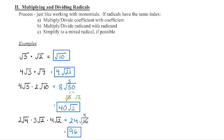Let's begin with multiplication. If radicals have the same index — multiplying a square root times a square root, or two cube roots together — we're going to multiply the coefficients, multiply the radicands, and then check to see if we can simplify if there is a perfect square left in that radicand.